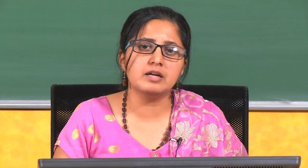Because of the open roof, staging a play had many more challenges than it does in the contemporary. Actors had to deal with many distractions such as the weather, noise, and the unruly crowd — there was no way in which all of these things could be managed. Compared to the contemporary times, theatre was not seen as a sacrosanct space. One could make noise, exhibit unruly behaviour, and there was no one to manage the crowd. So the actors had to brave these very difficult and different situations.